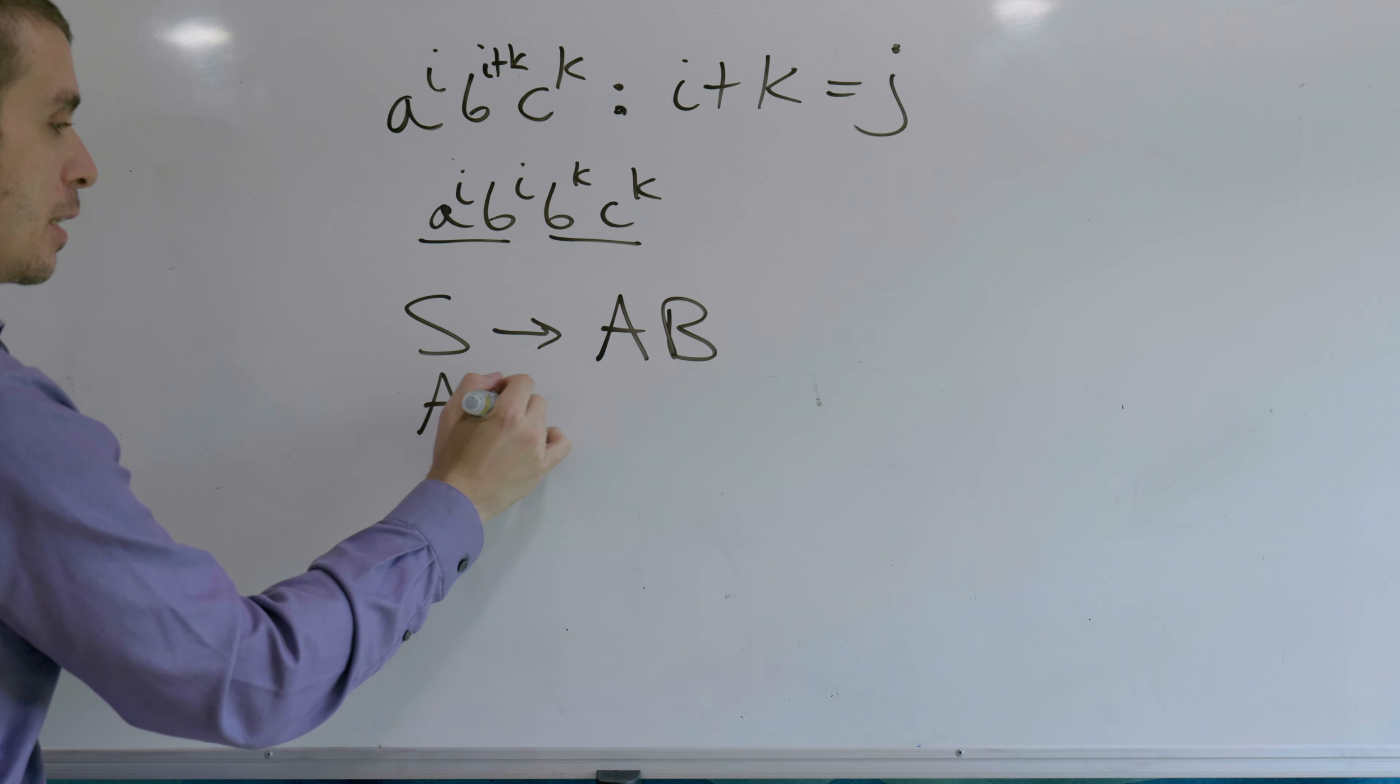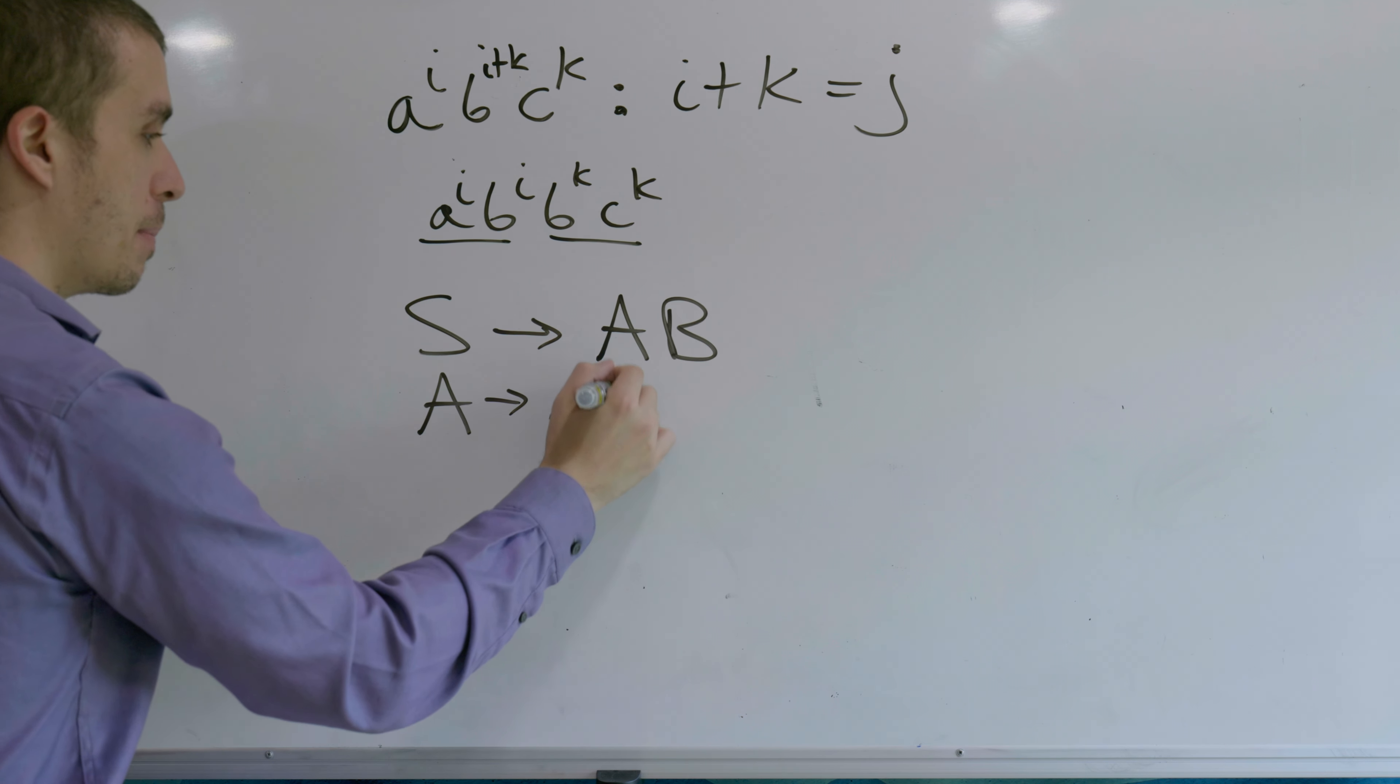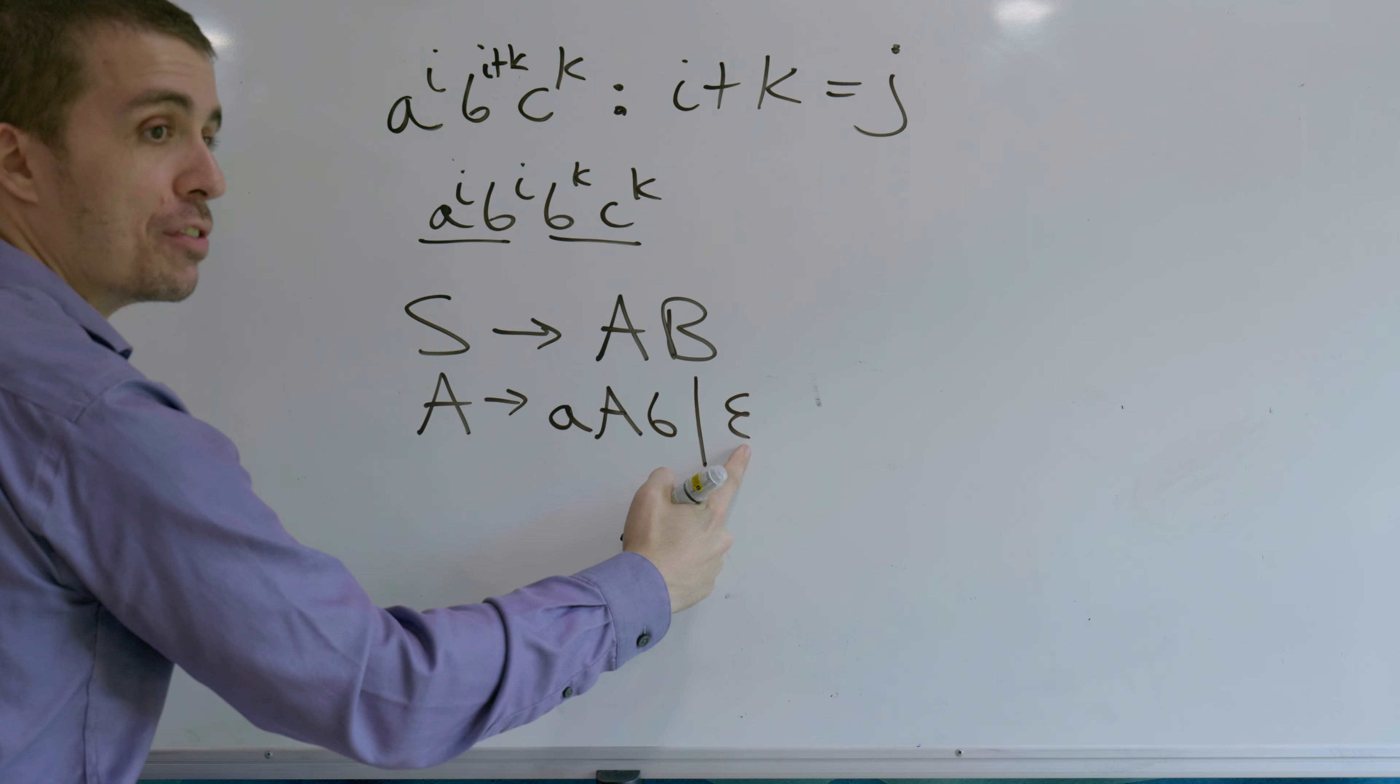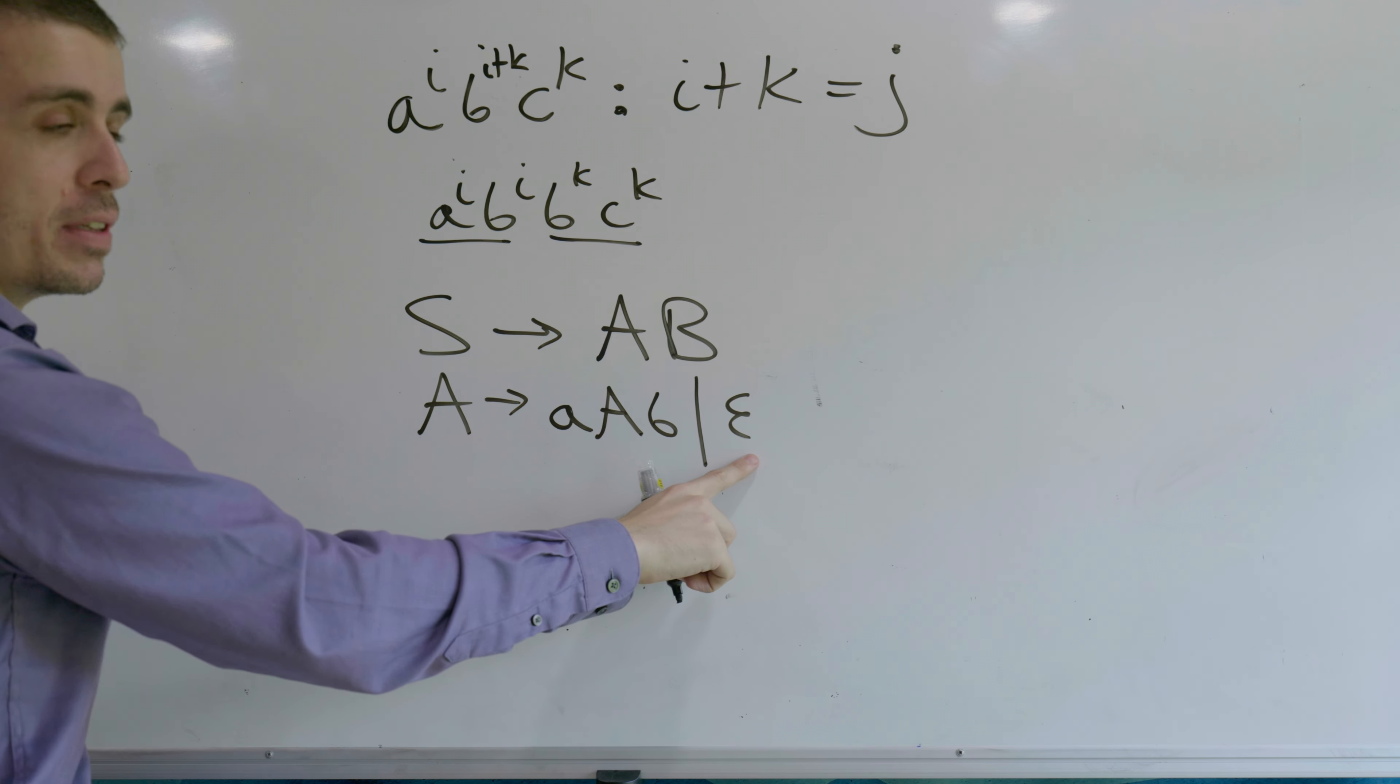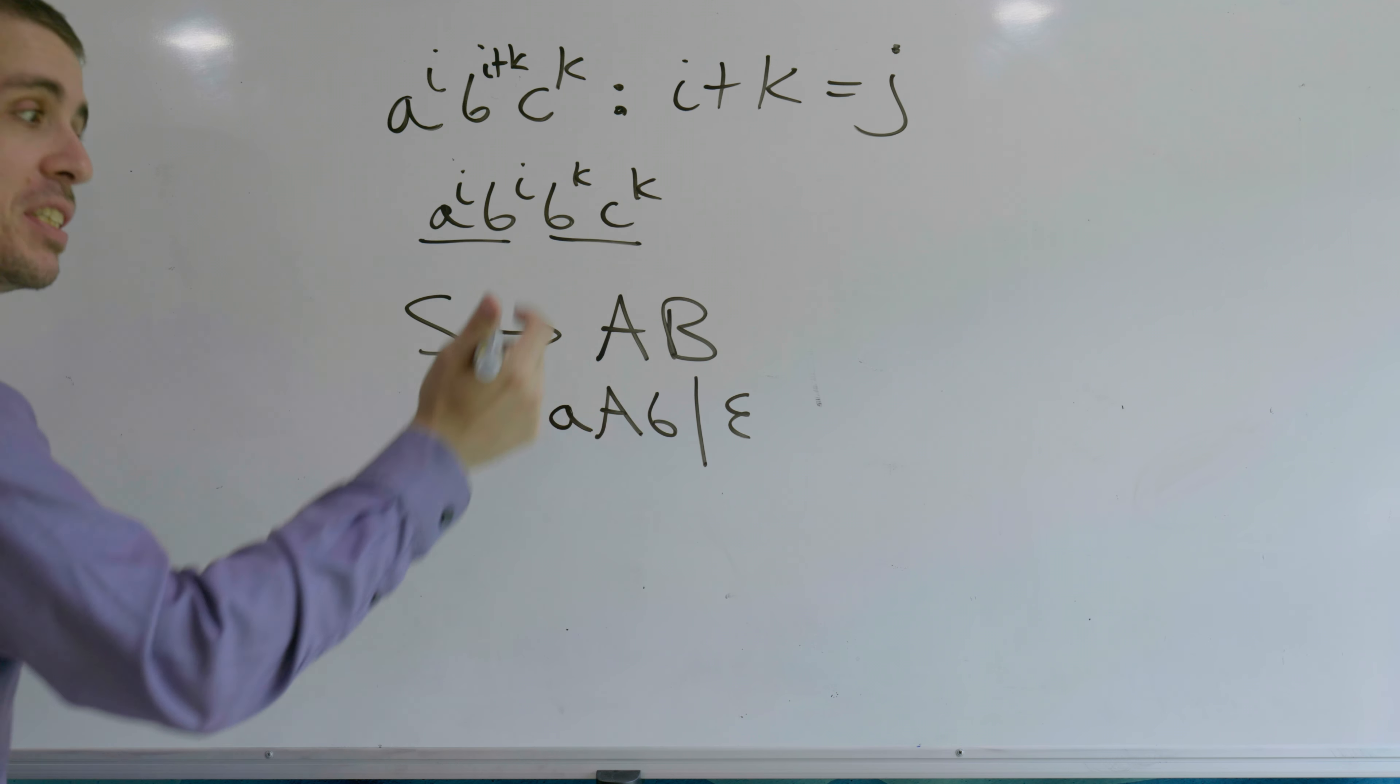So A is going to do all the work of this part, and that's fairly simple - it's just the number of a's matches the number of b's. So that's going to be a A b, and the base case for that is empty. And over here for capital B we can do a similar scenario.